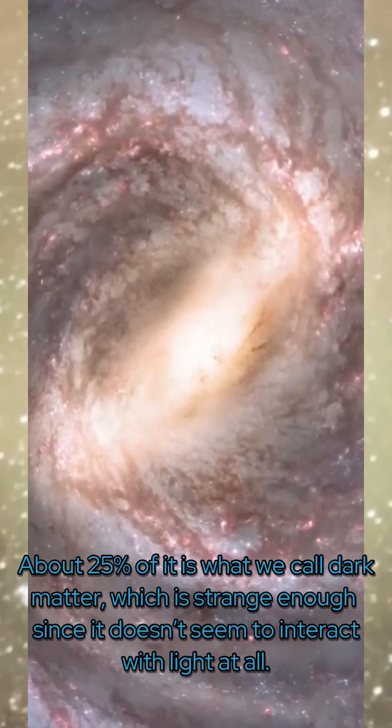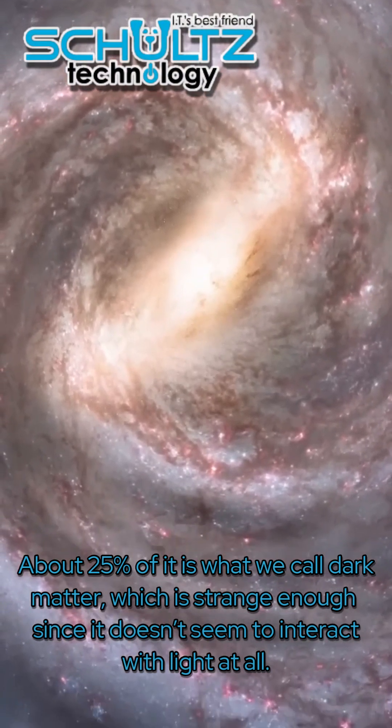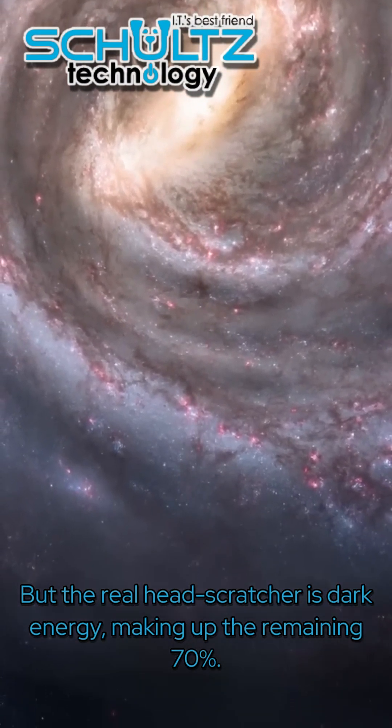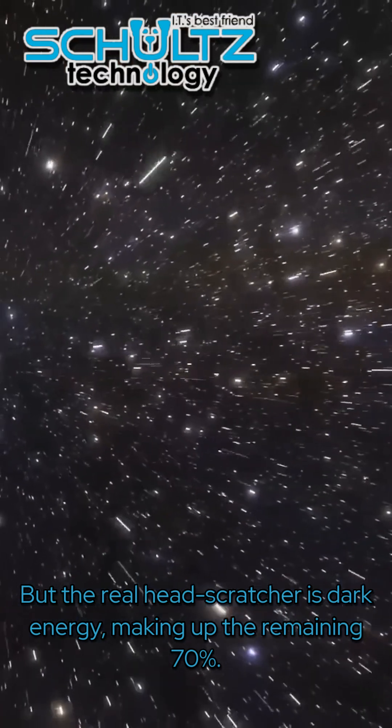About 25% of it is what we call dark matter, which is strange enough since it doesn't seem to interact with light at all. But the real head-scratcher is dark energy, making up the remaining 70%.